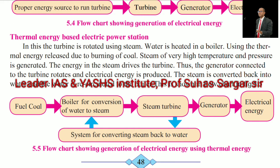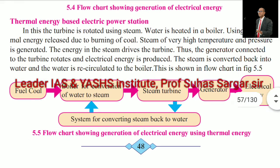Thermal energy based electrical power station: In this, the turbine is rotated using steam. Water is heated in the boiler using the thermal energy released due to burning of coal. Steam of very high temperature and pressure is generated. The energy in the steam drives the turbine. Thus, the generator connected to the turbine rotates and electrical energy is produced. The steam is converted back into water and recirculated to the boiler. See the flow chart showing generation of electrical energy using thermal energy.